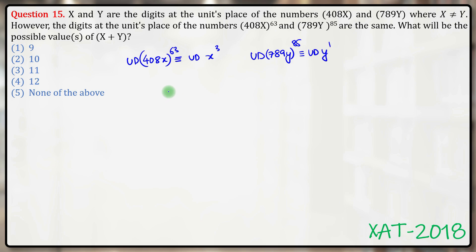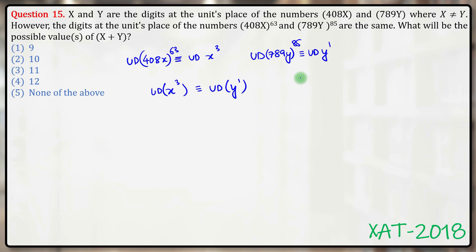In other words, the units digit of x cubed is the same as the units digit of y — or y itself, since y is a single digit. I need to consider all cases and find the possible value or values of x plus y.